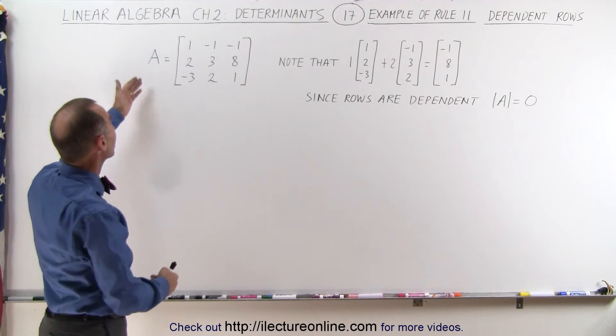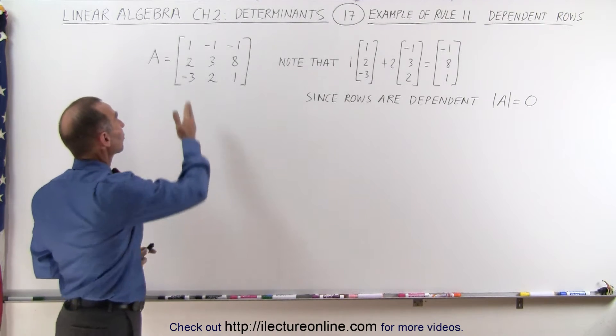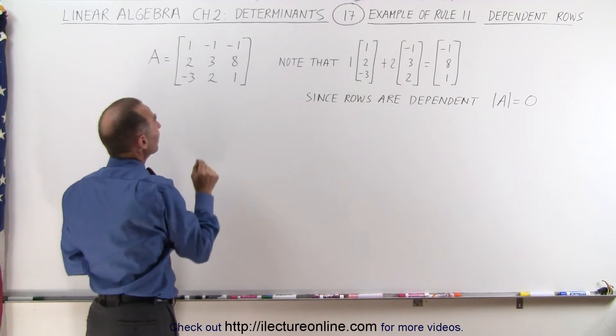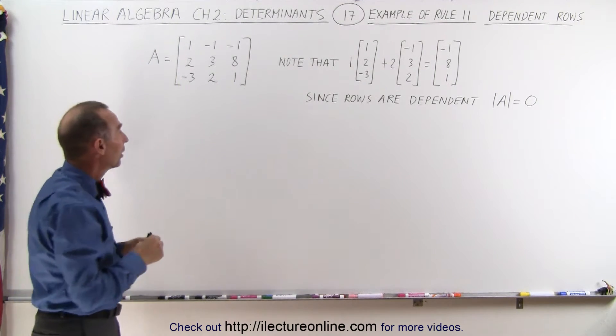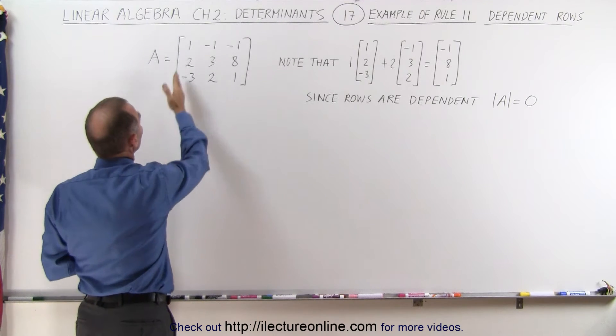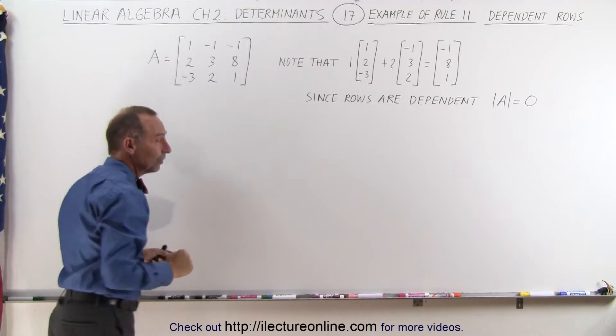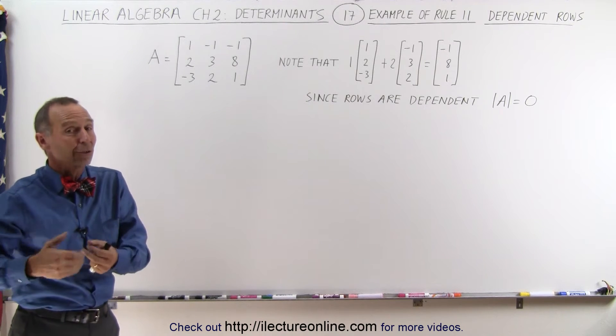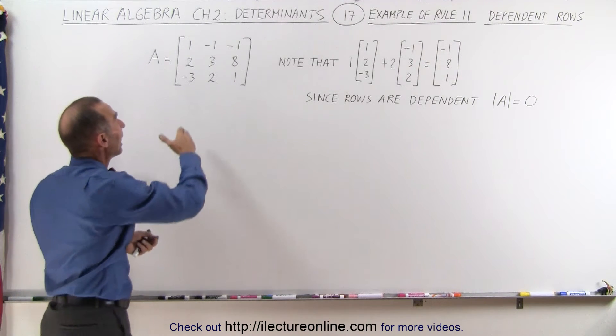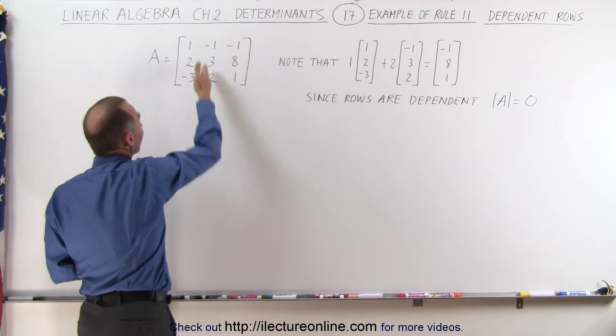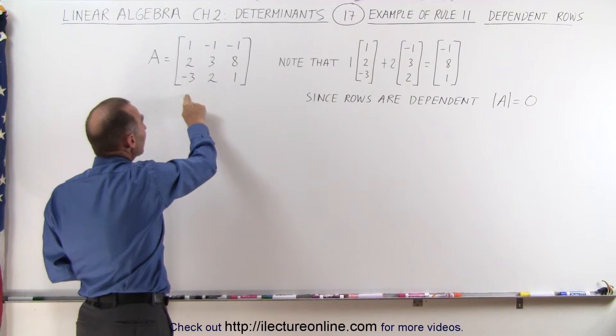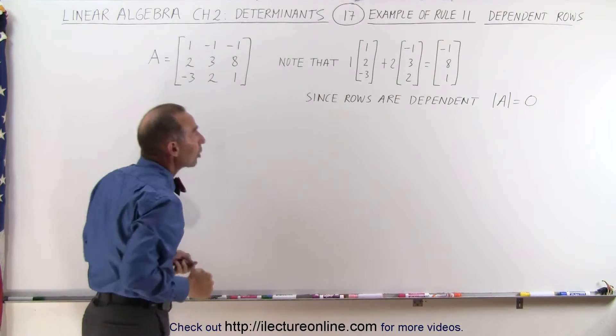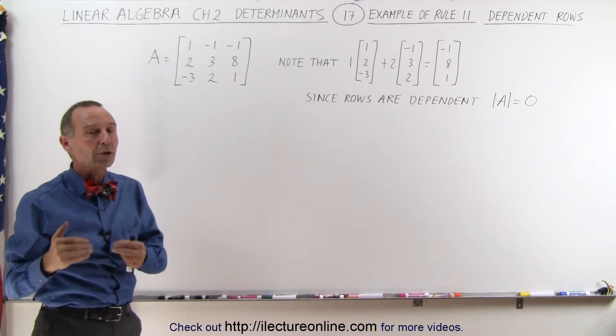Let's take the 3 by 3 matrix A and notice that it has three columns. If we can find a constant such that we multiply the first column by that constant and then we find another constant and we can multiply that times the second column, if that then equals the elements in the third column we can say that the rows are dependent.